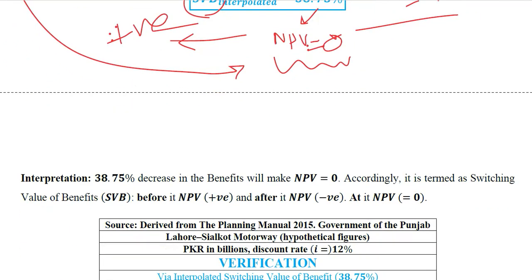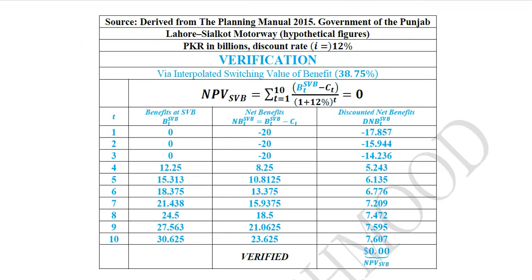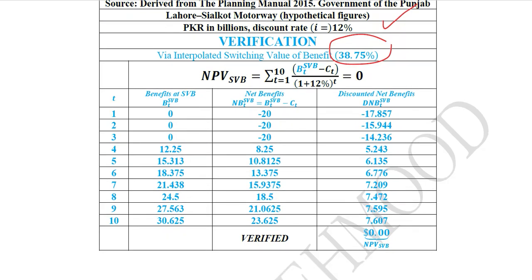After this we can see the interpretation, which is very straightforward. The switching value of benefits is that value of decline in benefits that will make the NPV equal to 0. Accordingly, it is termed the switching value of benefits. Now we can try to verify the result. For verification, we put this percentage decline — 38.75% — into the benefits and see if it actually turns the NPV to 0.